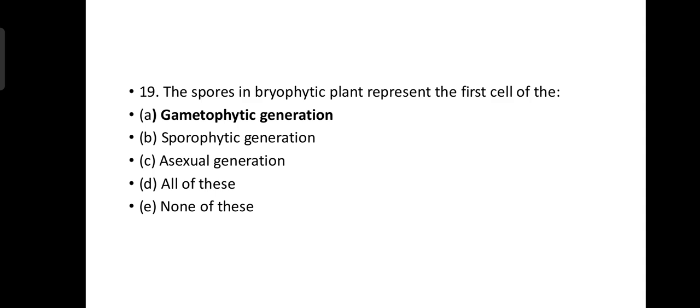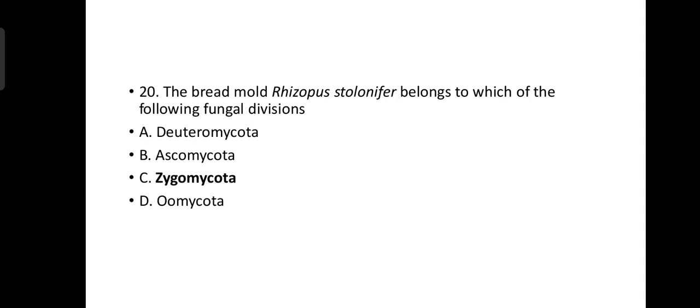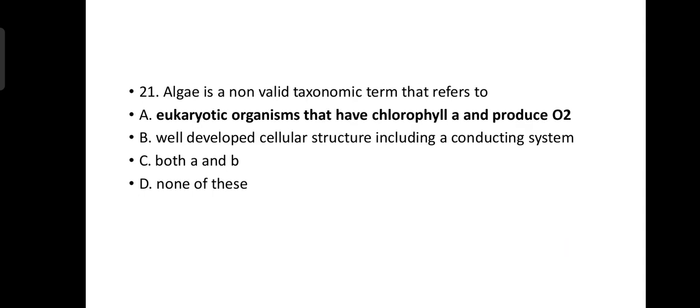The spores of embryophytic plants represent the first cell of the gametophytic generation. The bread mold Rhizopus stolonifer belongs to Zygomycota. Algae is a non-valid taxonomic term that refers to eukaryotic organisms that have chlorophyll and produce oxygen.